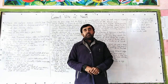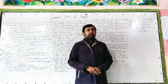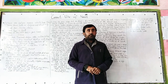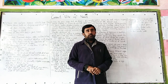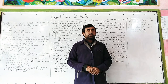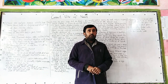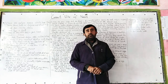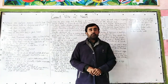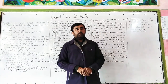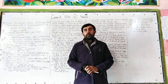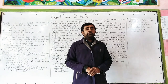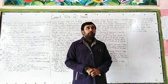Fish is generally used in singular form whether there are thousands of fish of the same type. But when there are different types of fish, then the word is used as 'fishes.' For example: 'There are four different types of fishes in the pond.'